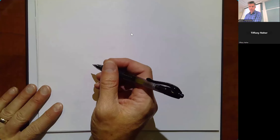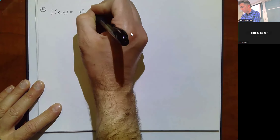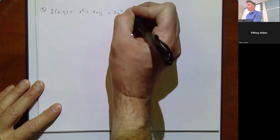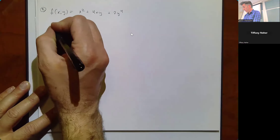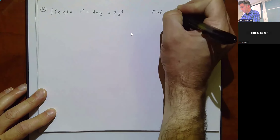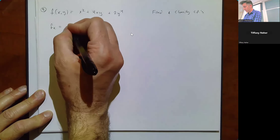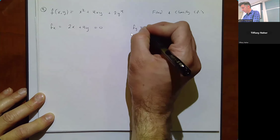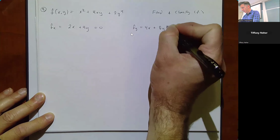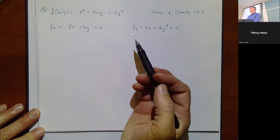Let's look at another example. f(x, y) = x² + 4xy + 2y⁴. Taking partial derivatives: fx = 2x + 4y, set equal to zero. fy = 4x + 8y³, set equal to zero. This is one where you can't just find values directly — you have to find one variable in terms of the other.